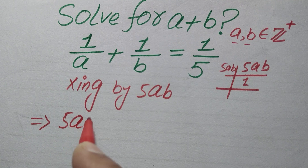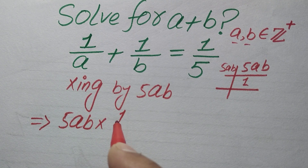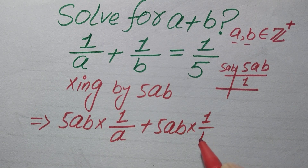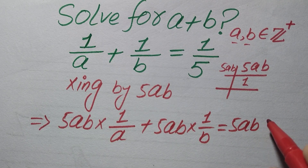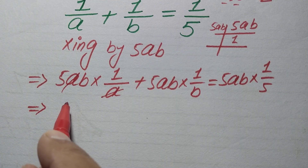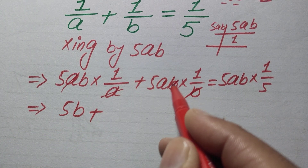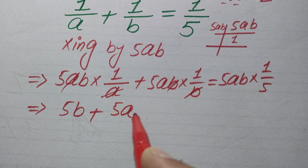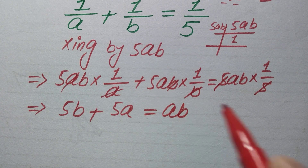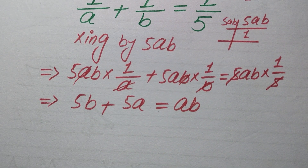When we multiply 5ab on each term it is written as 5ab × (1/a) + 5ab × (1/b) = 5ab × (1/5). The a's cancel on the first term giving 5b, the b's cancel on the second term giving 5a, and the 5's cancel on the right giving ab. So we get the equation: 5b + 5a = ab.